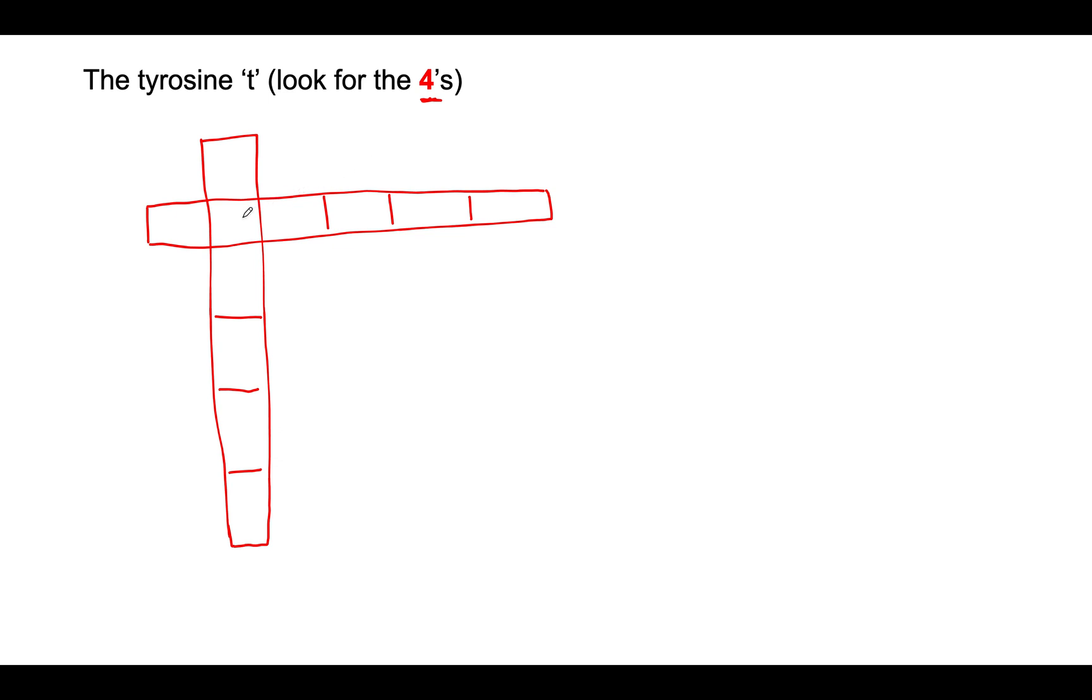So because this is the tyrosine T, it makes sense that we're going to put the amino acid tyrosine right here in the center of the tyrosine T. As I mentioned in the last slide, phenylalanine gets converted into tyrosine by the enzyme phenylalanine hydroxylase, or PAH. And this is the enzyme that is defective in the disorder PKU.